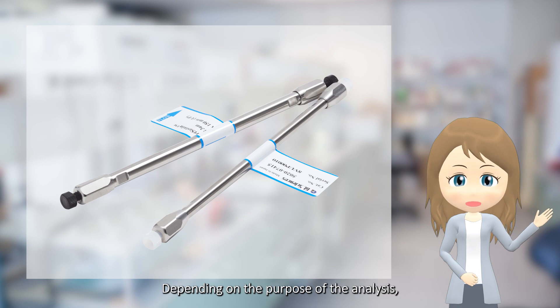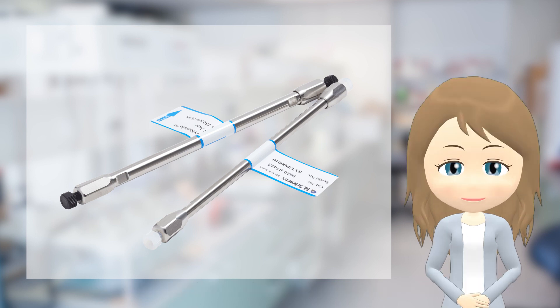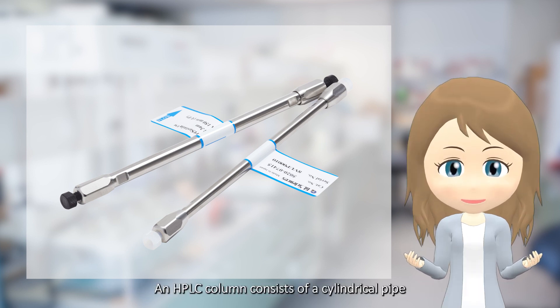Depending on the purpose of the analysis, an appropriate column is selected and installed in the instrument. An HPLC column consists of a cylindrical pipe filled with fine particles known as packing material.